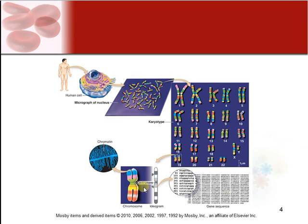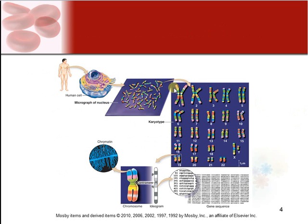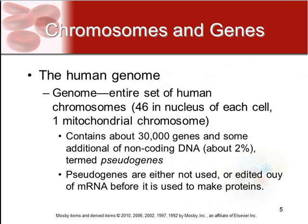Here you can see a picture of a chromosome from the human body. The human body is made up of cells, which are made up of genes. The human genome is the entire set of human chromosomes — there are 46 in each nucleus of a cell, and then there's one mitochondrial chromosome. The genome contains about 30,000 genes and some additional non-coding DNA segments called pseudogenes.